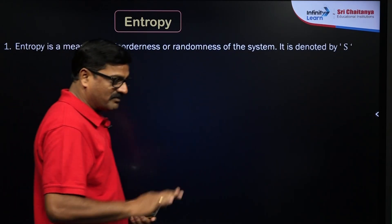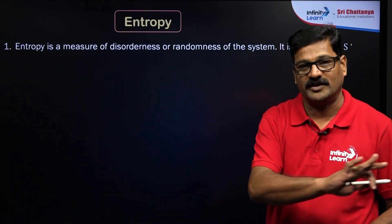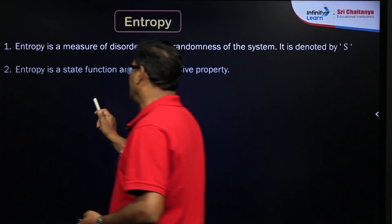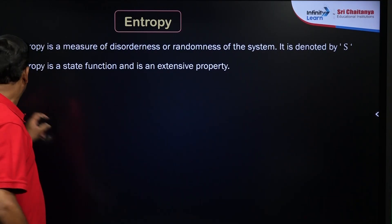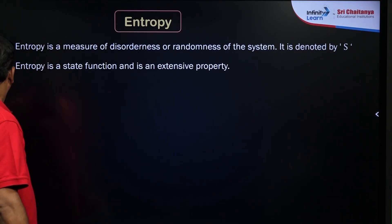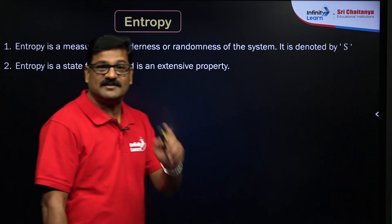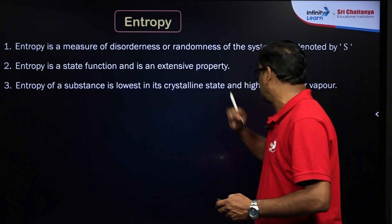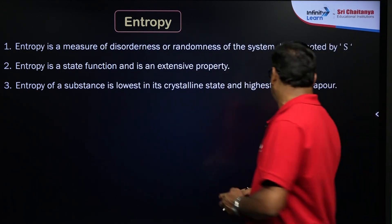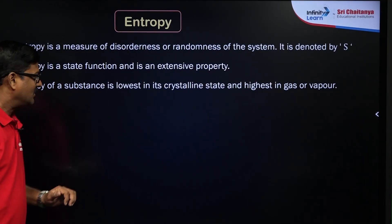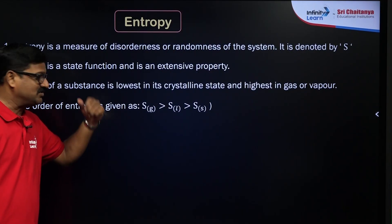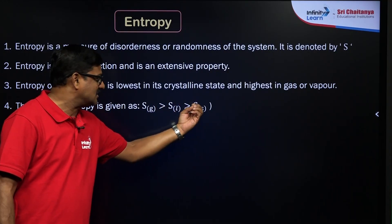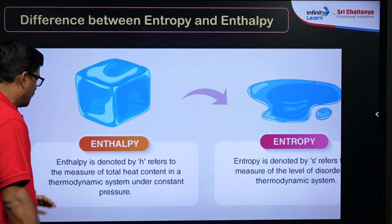Entropy is a measure of the degree of randomness or degree of freedom of a system. It is denoted by S, and it is a state function and an extensive property. You cannot measure the absolute value of entropy; rather, you can only measure the change in entropy. The entropy of a substance is lowest in the crystalline state and highest in the vapor or gas state. The order of entropy is: gas > liquid > solid.